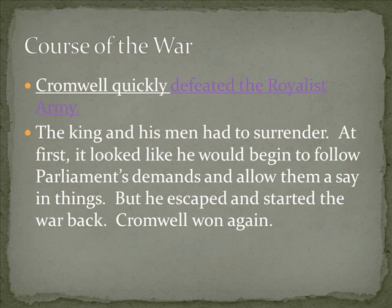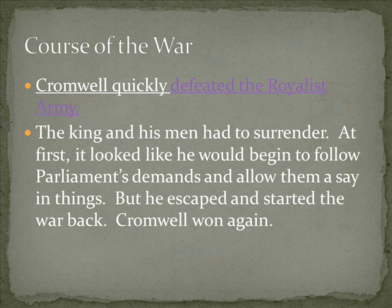King Charles I was not going to go down easily. He was determined to fight back, and he was a stubborn and determined man. But quickly he got it handed to him. Oliver Cromwell and his New Model Army quickly defeated the Royalists — the guys that were supporting the king. The king and his men had to surrender right away.